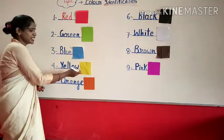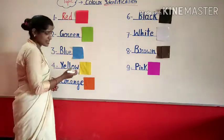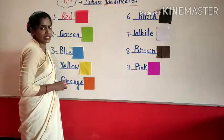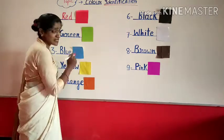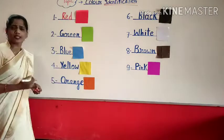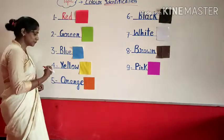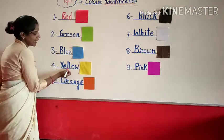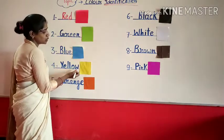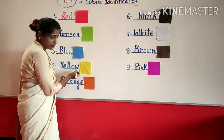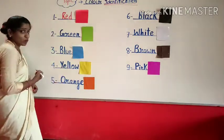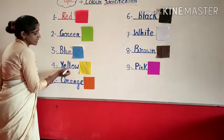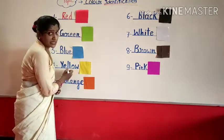Come to the next color. Which color is this? This is yellow color. And what is the spelling of yellow? Y-E-L-L-O-W. Once again, Y-E-L-L-O-W. Yellow.